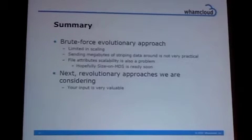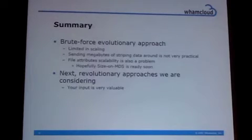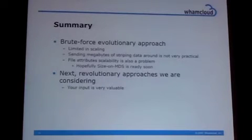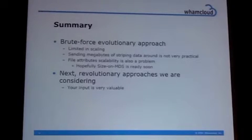In summary, this is just a brute-force evolutionary approach and it's limited in scaling for several reasons. It's not a great idea to eventually send around megabytes of striping data, and attribute scalability is somewhat limited — we need to talk to a lot of OSTs. Hopefully, this last problem will be somewhat contained by size-on-MDS once it becomes ready, and hopefully that will be relatively soon.